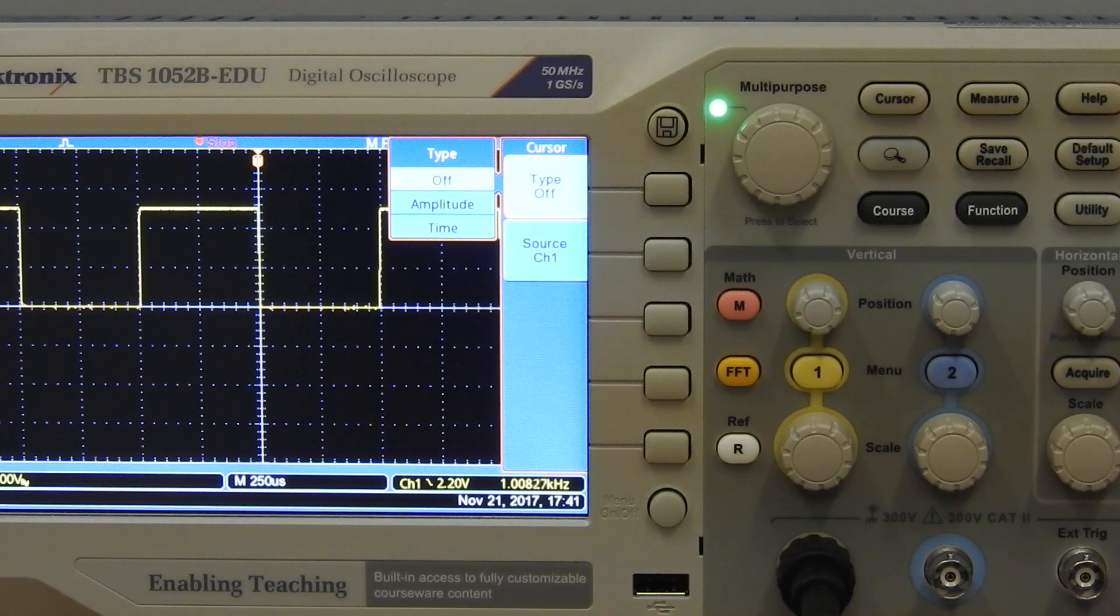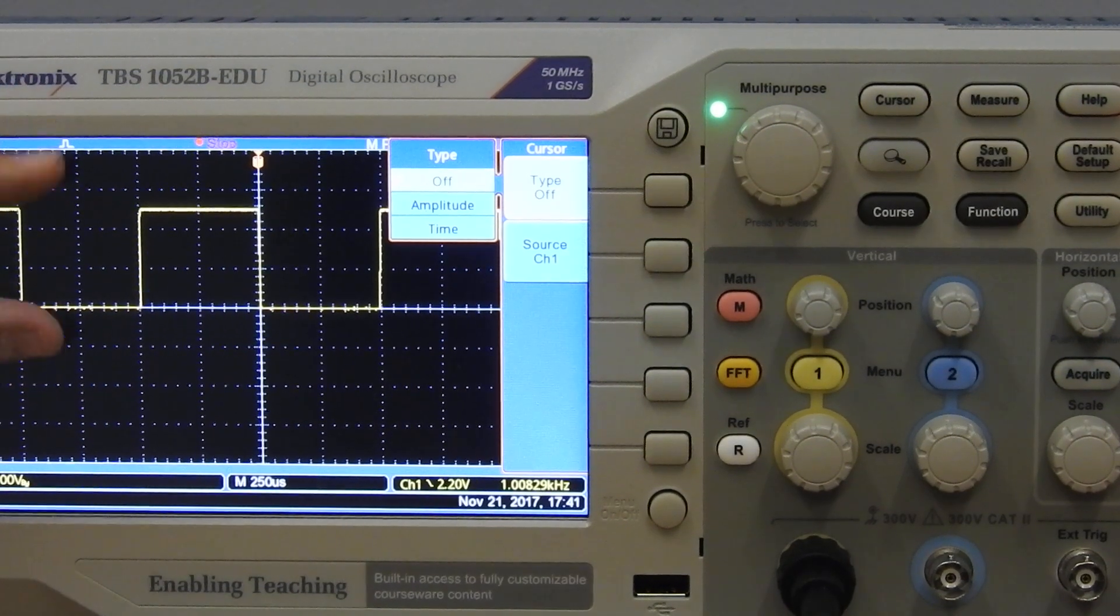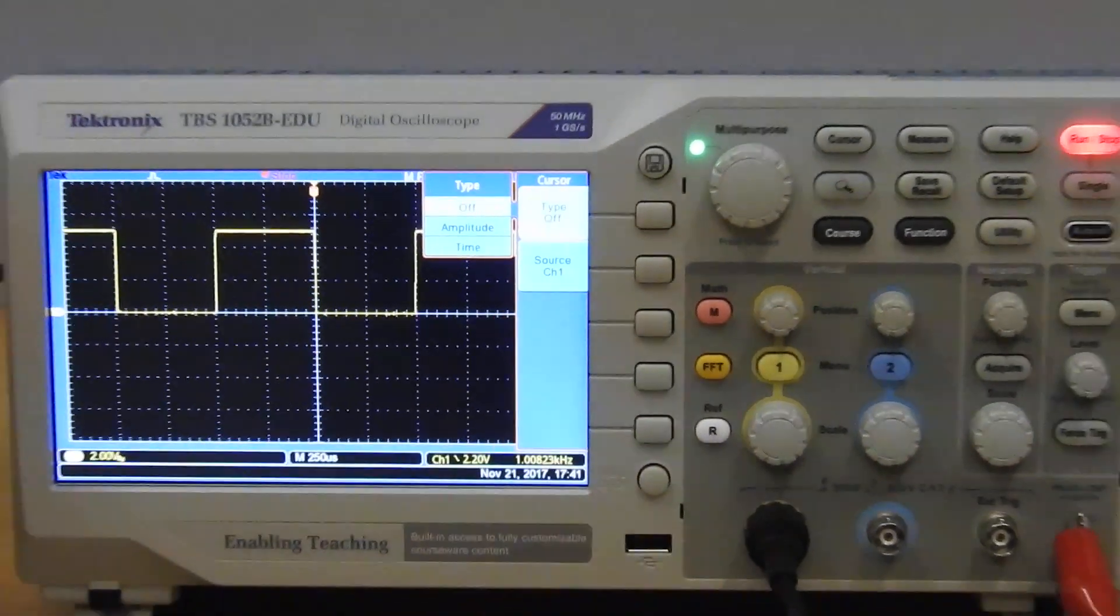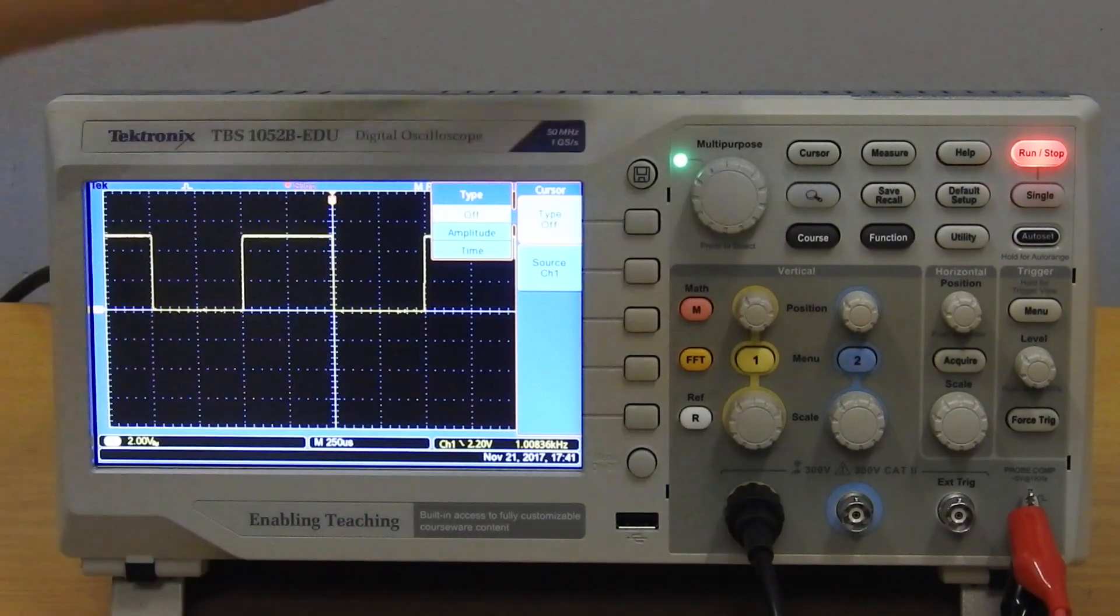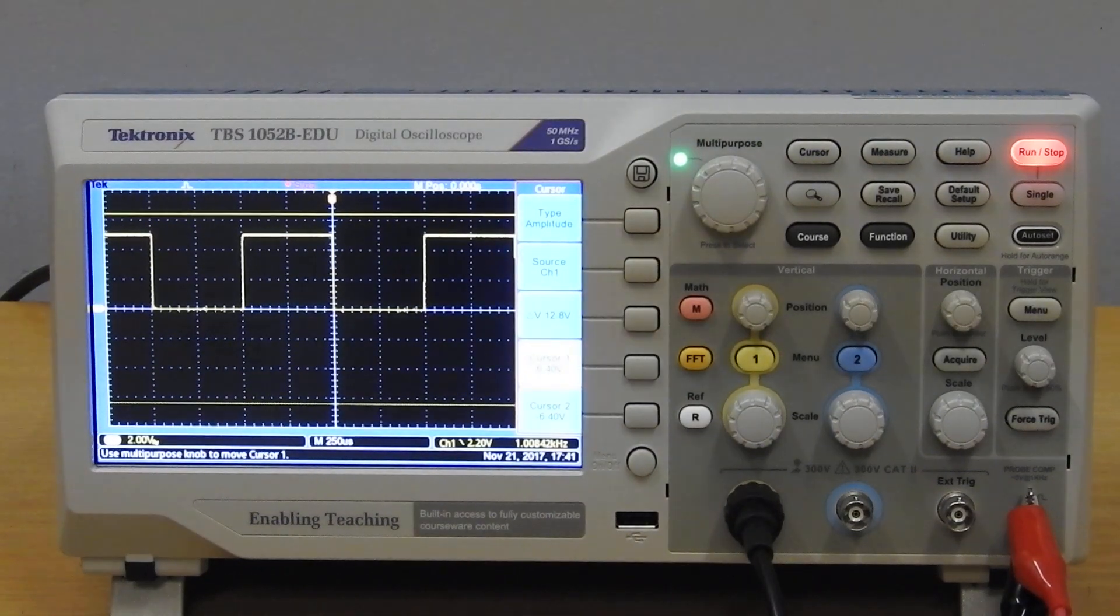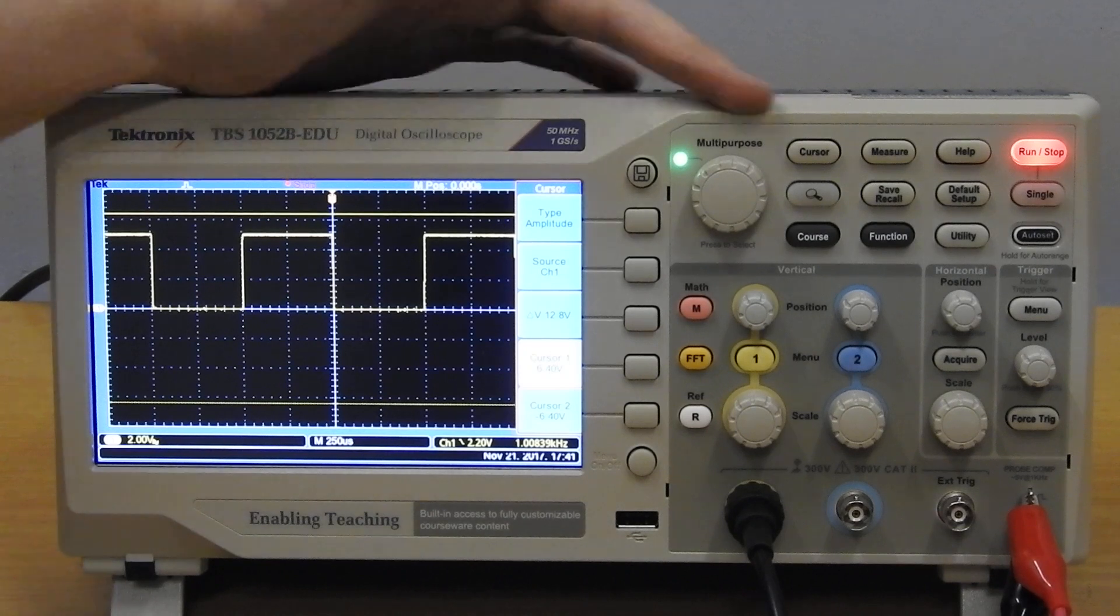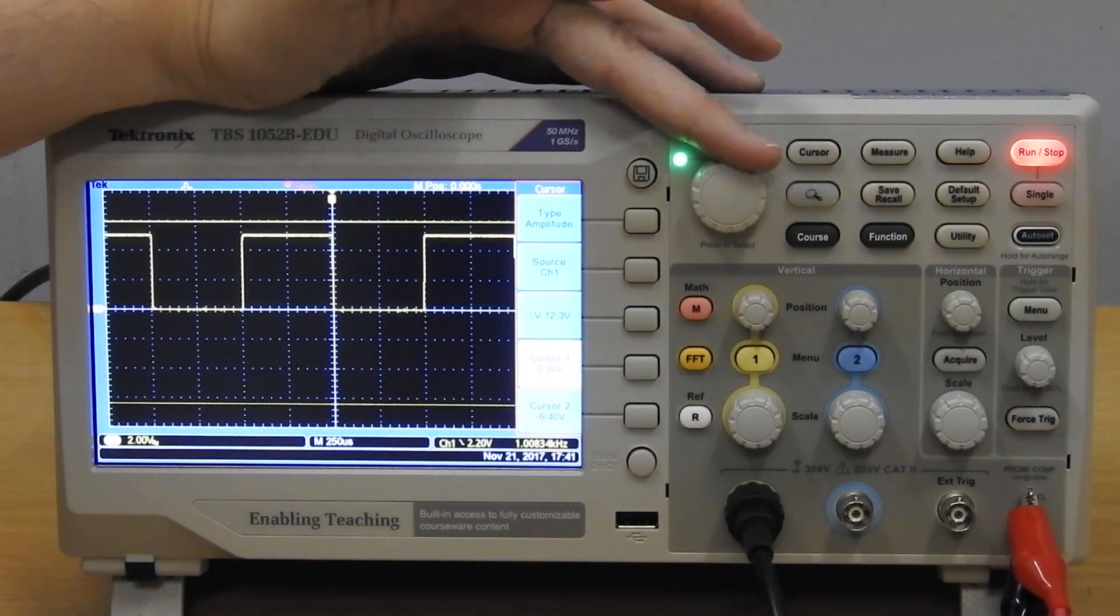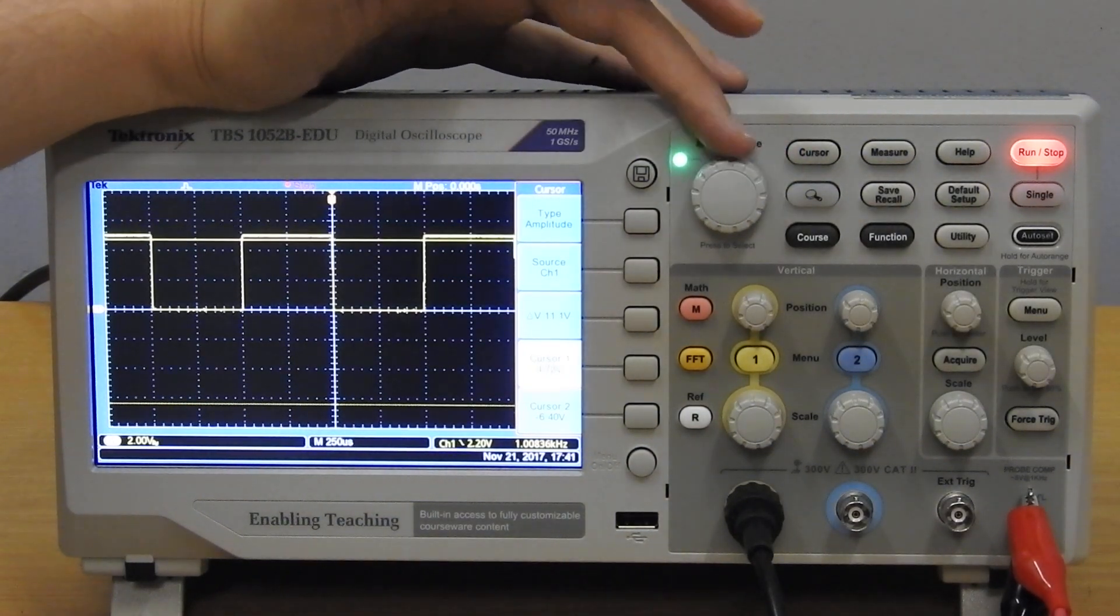And you can set the type of cursor. You can either set it to measure amplitudes or for time. Let's go to amplitude. And now you'll see that there is two lines. Okay, so using this knob you can set the position of this line.